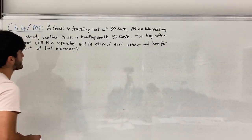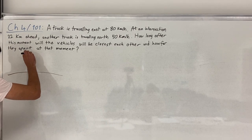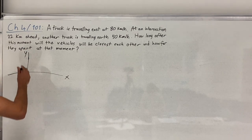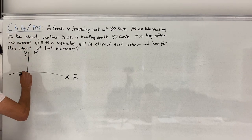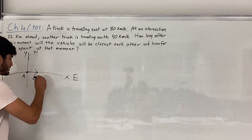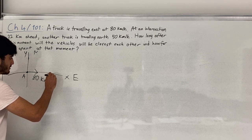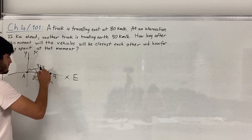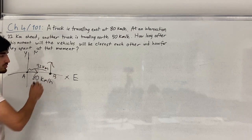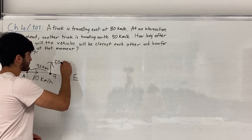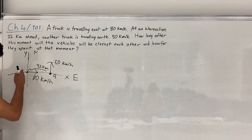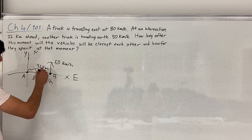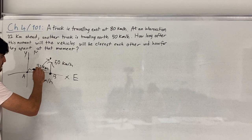How long after this moment will the vehicles be closest to each other, and how far apart are they at that moment? To visualize: I'll use the x-axis as east and the y-axis as north. Truck A starts at the origin and moves east at 8 km/h. Truck B starts 32 km to the east and travels north at 50 km/h. At some moment, when truck A is here and truck B is here, the distance between them is minimum.